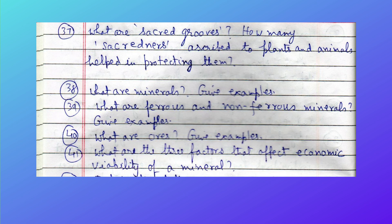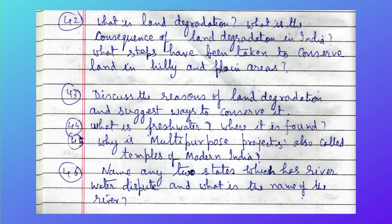What are minerals — give examples. What are ferrous and non-ferrous minerals — give examples. What are ores — give examples. What are the three factors that affect the economic viability of a mineral? What is land degradation and what are its consequences in India?